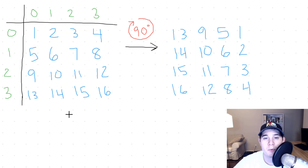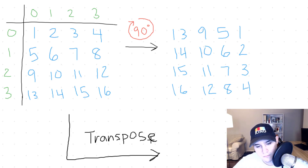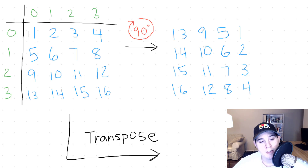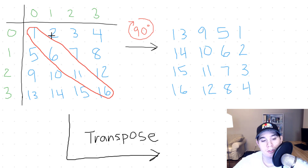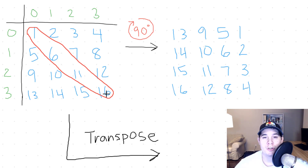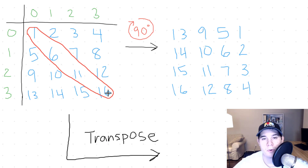The first thing we need to do is transpose our original matrix. What a transpose does is it takes the main diagonal of your matrix — which always goes from top left to bottom right — and reflects everything around this diagonal. In other words, we're going to turn our rows into our new columns. So let's turn our original matrix into a transposed matrix.